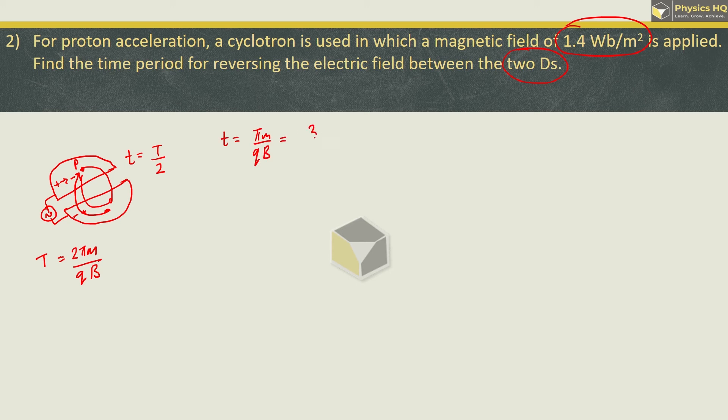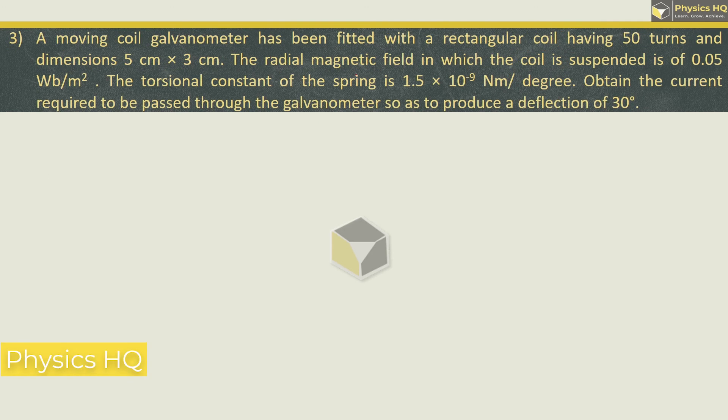Putting the values: π is 3.142, m is mass of proton which is 1.67 × 10⁻²⁷ divided by the charge 1.6 × 10⁻¹⁹ into the magnetic field which is 1.4. If you solve this, you will get 2.342 × 10⁻⁸ seconds.